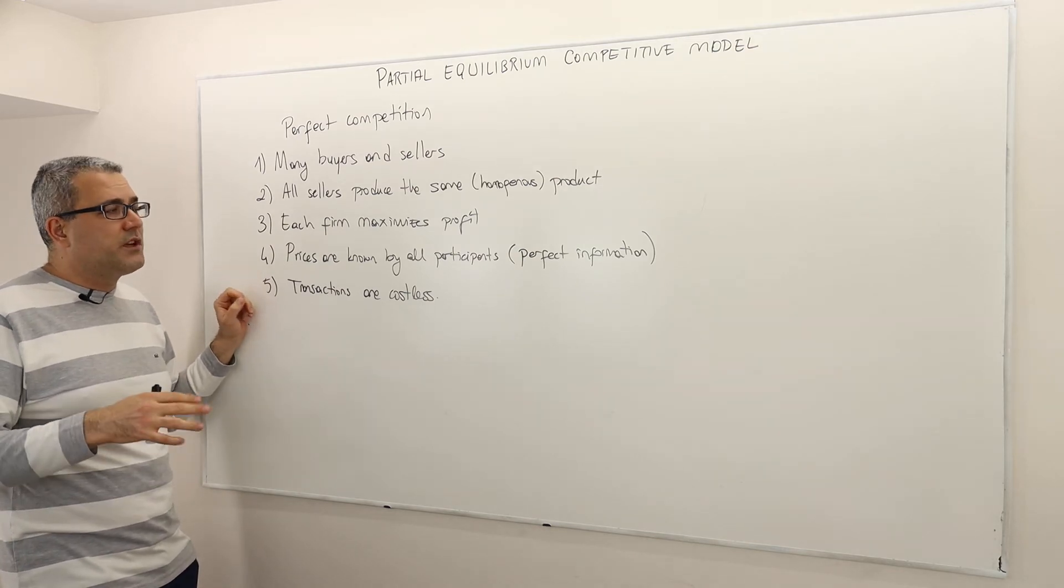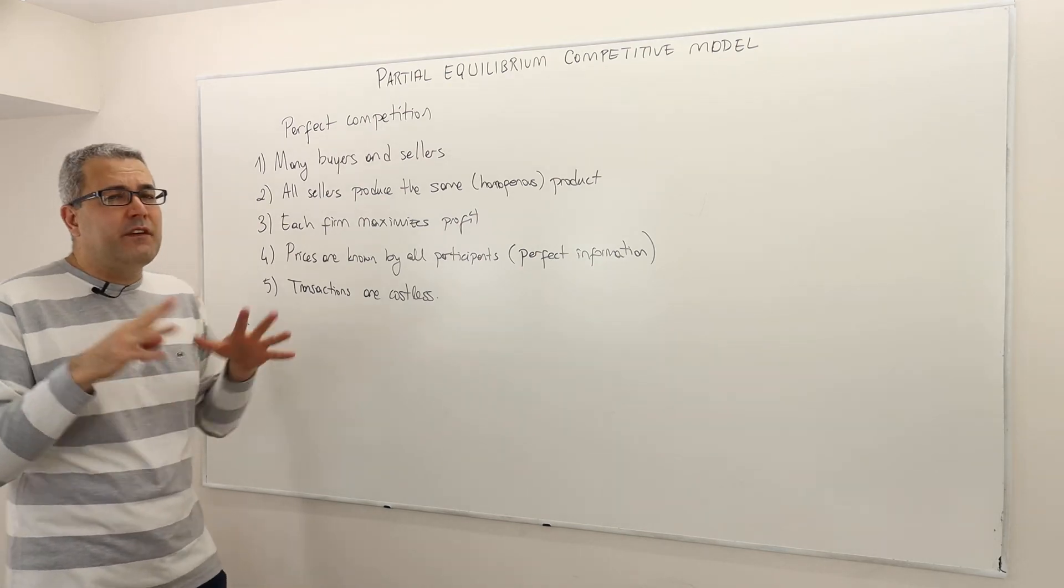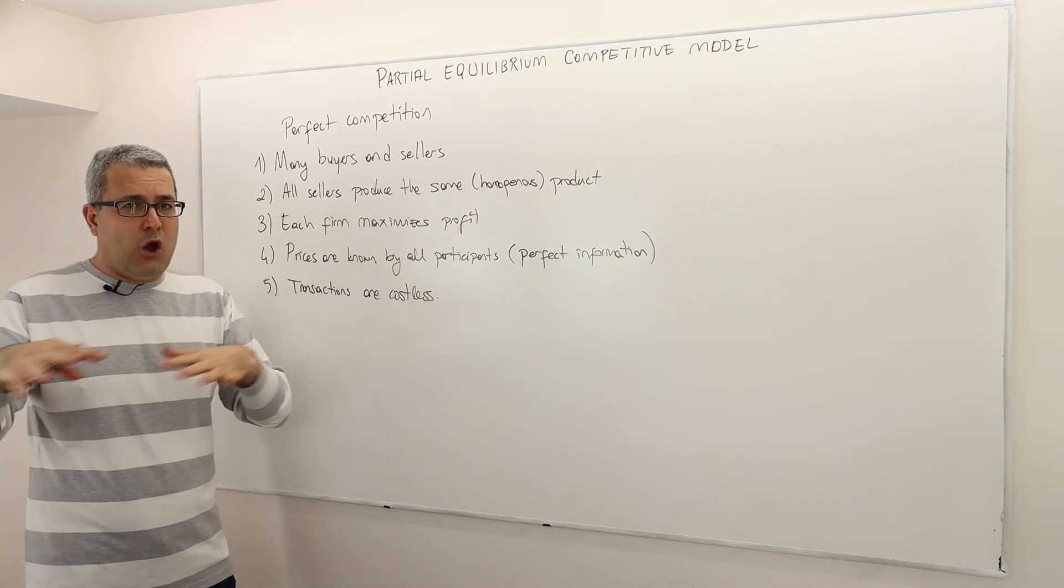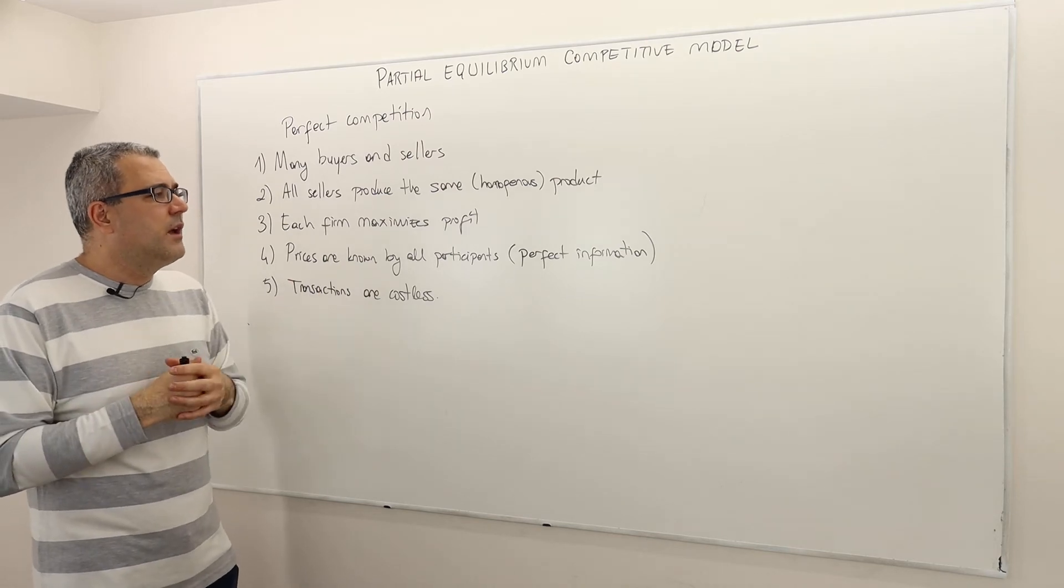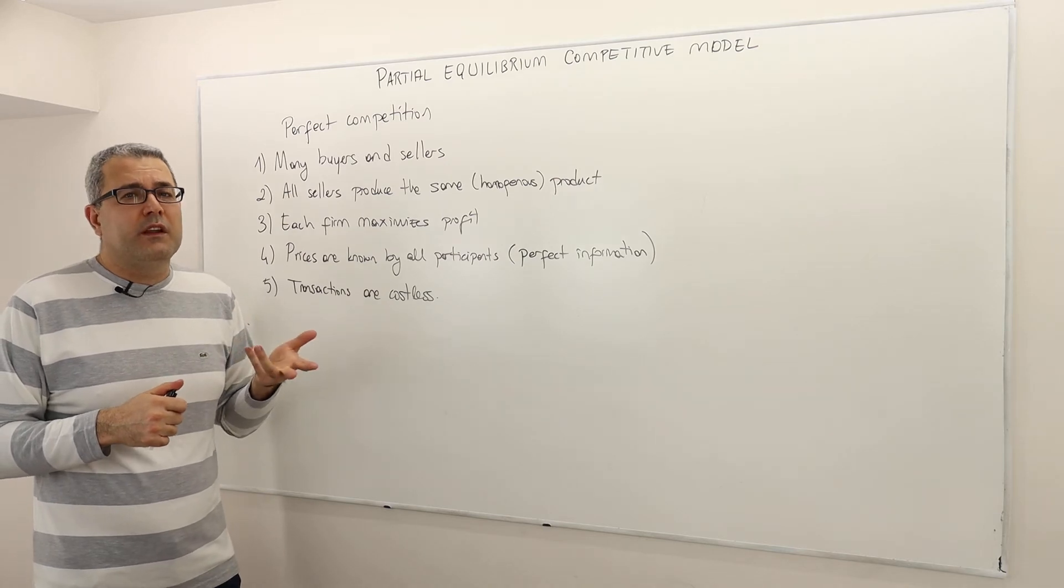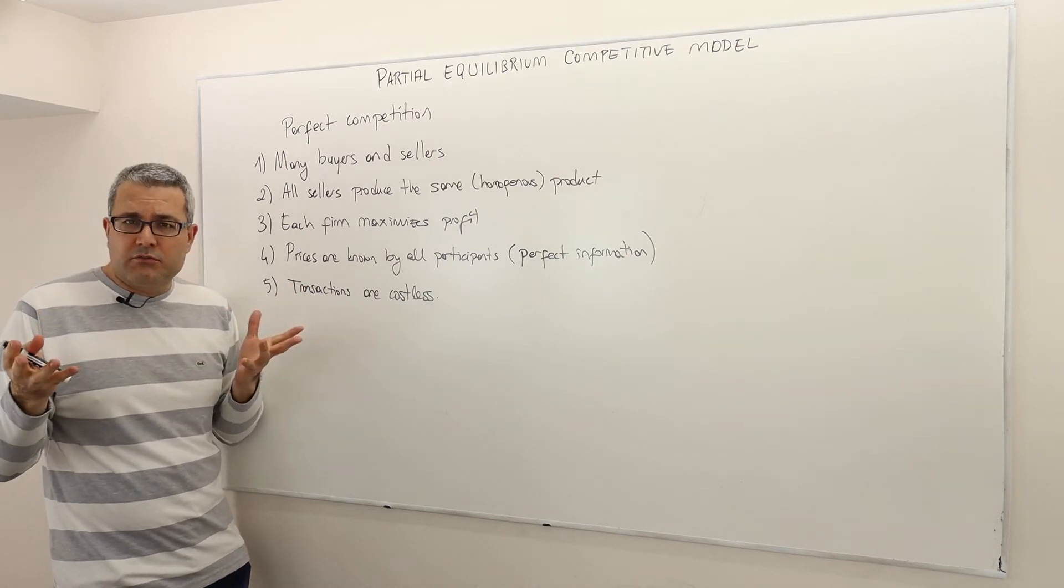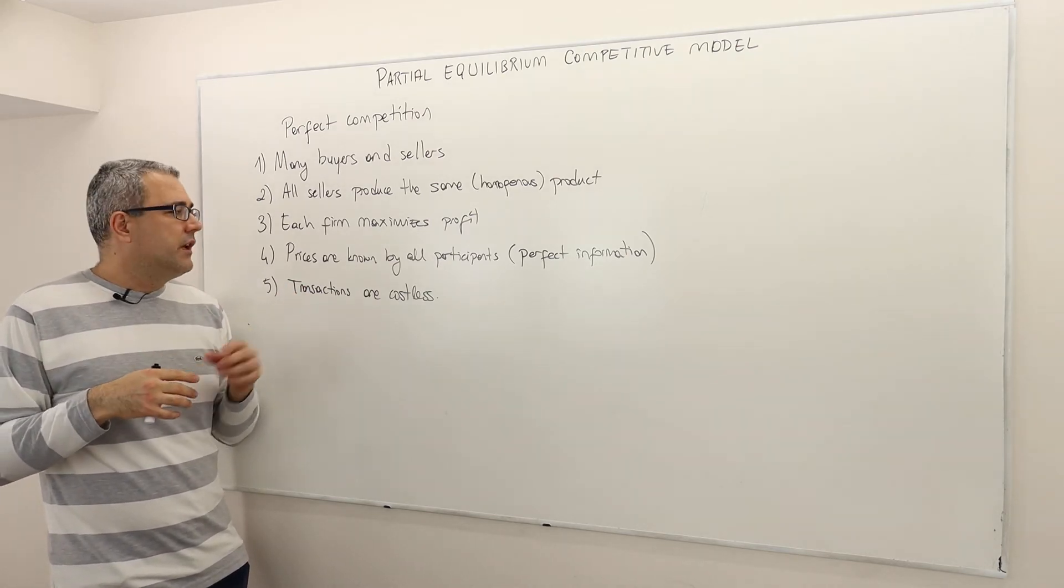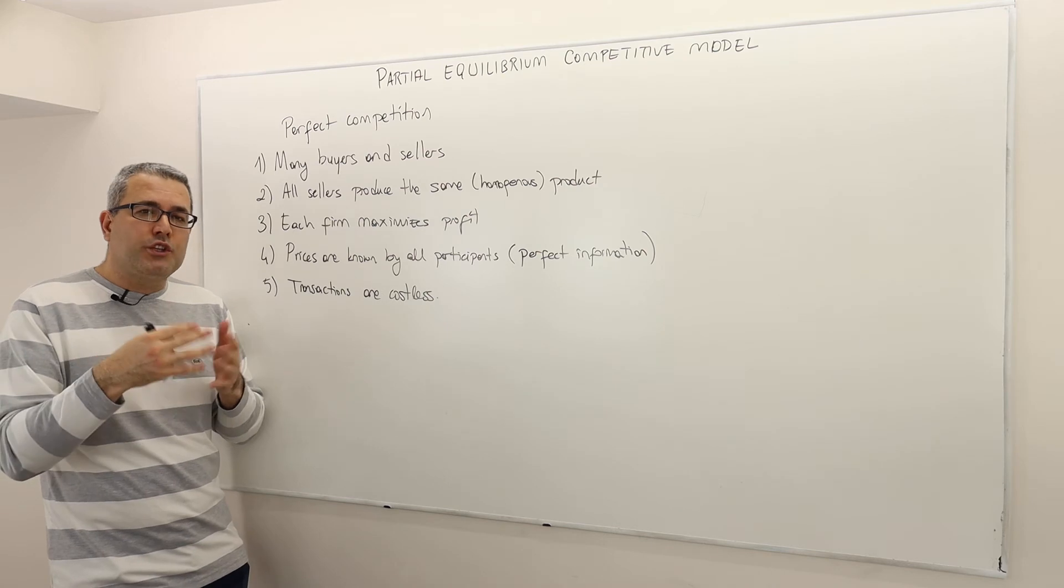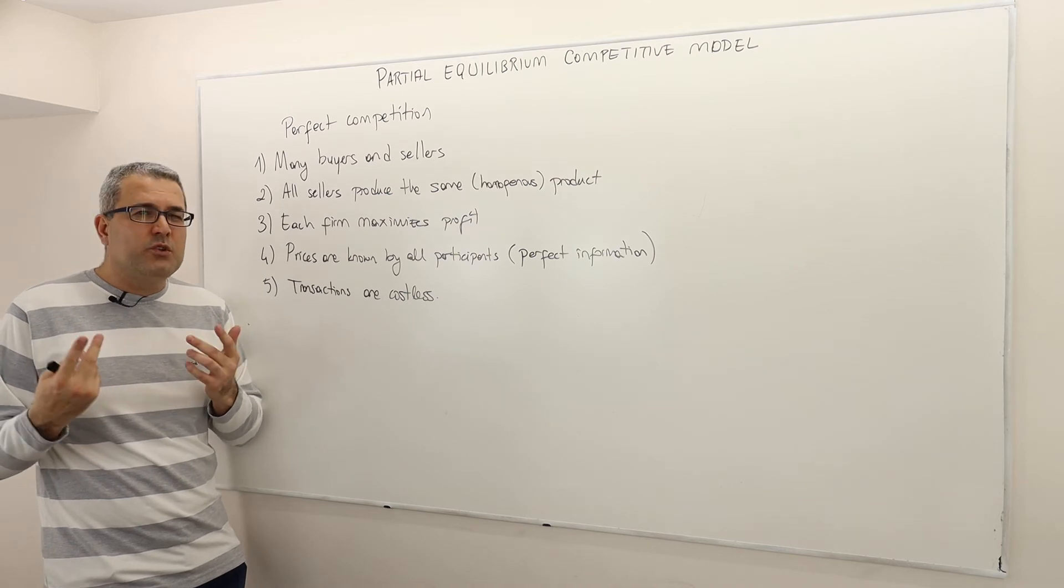The fourth one is that the prices are known by all the participants. But you can think of this as not only prices, but everything, every information is common knowledge. It's perfectly known by everybody. So the information is perfect. So you can think, for example, the stock market. Is it a perfectly competitive market? I mean, for any particular stock, there are many sellers, many buyers. Well, unfortunately, the information is not really perfect. So, for example, some sellers or some buyers actually watch this particular stock very closely, or maybe they have some insider information. And you see what I mean?